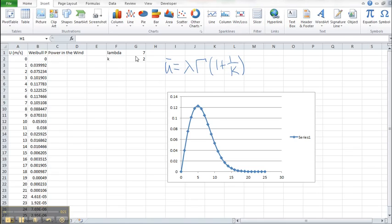First, you'll see that I've noted we have used a lambda of 7, that's what we've used in our equation over here, and a k of 2. And using this information, we can find the annual average wind speed, u-bar, using the equation that I've pasted in here from the notes.